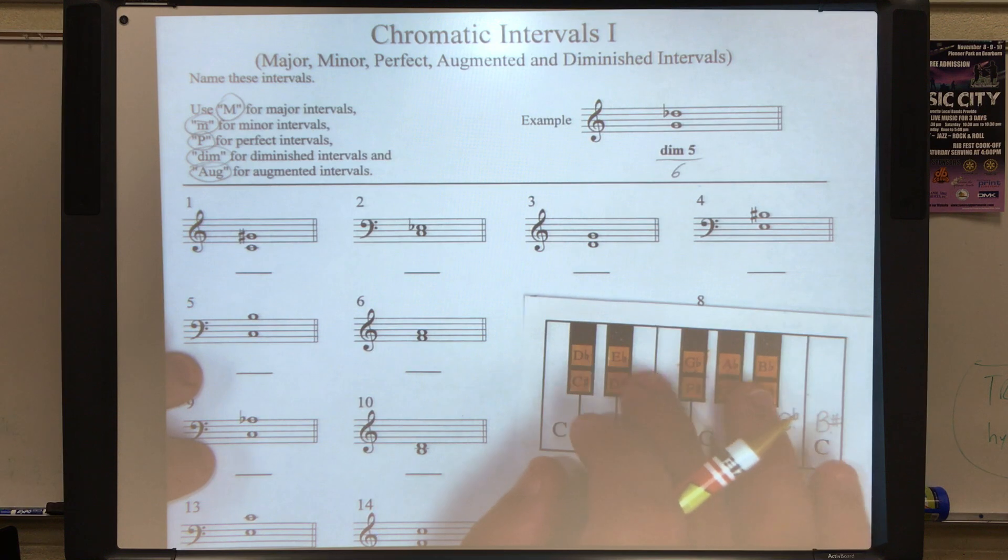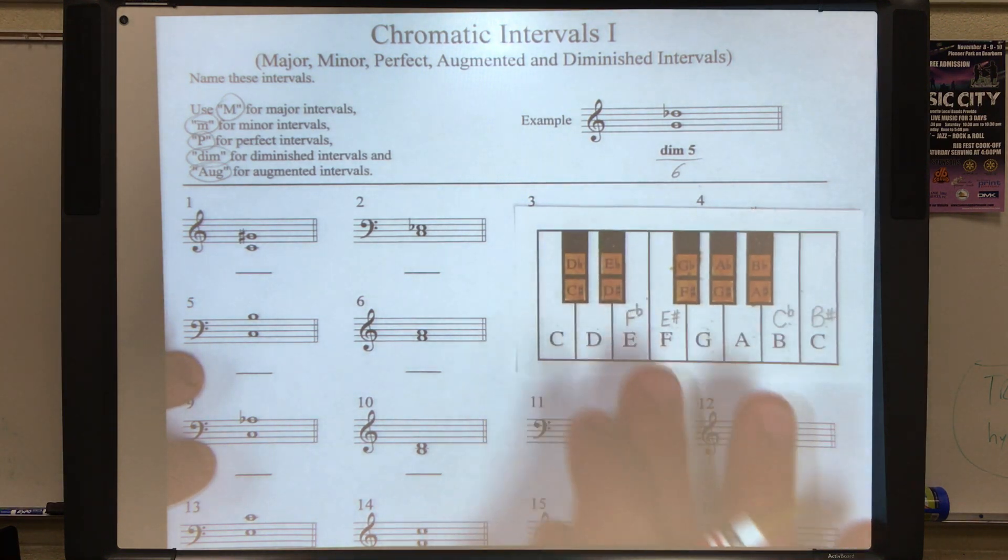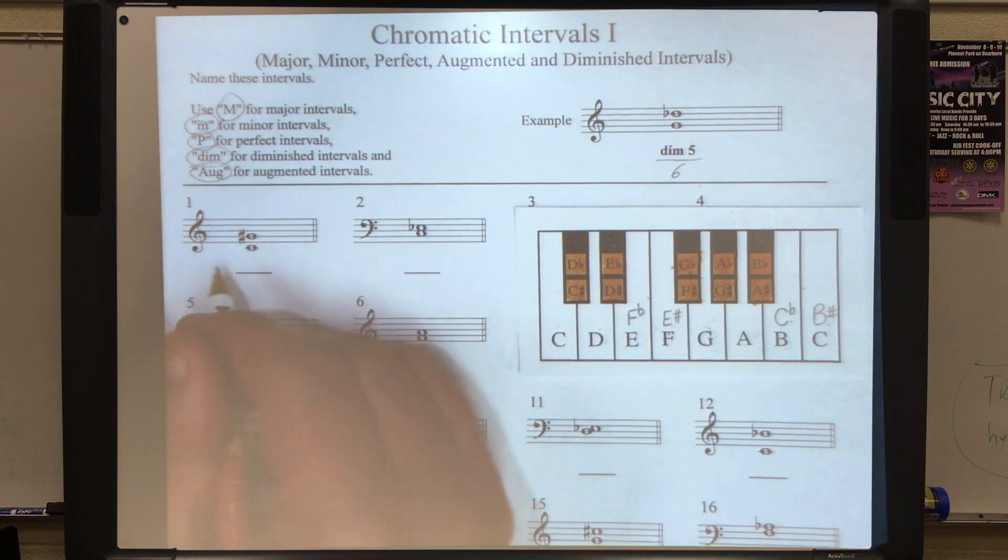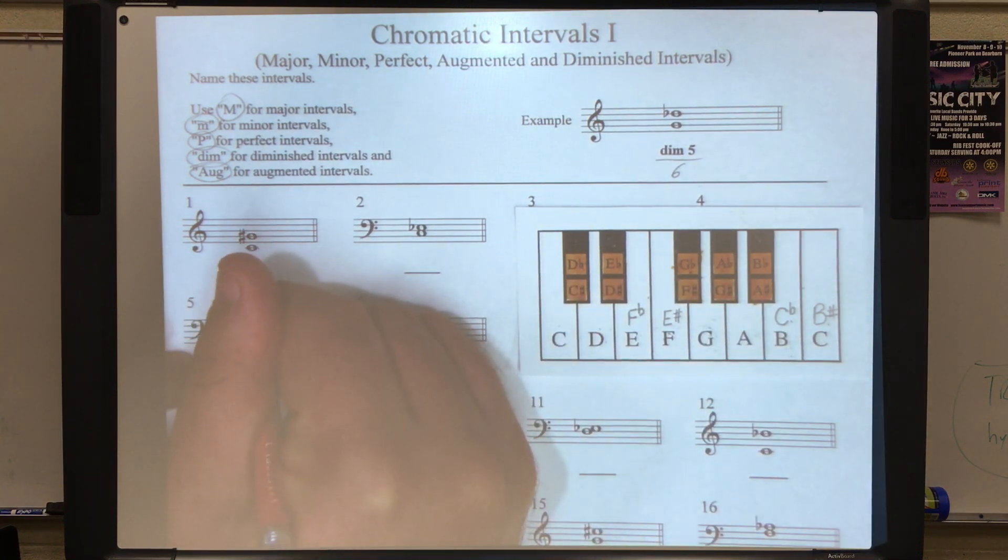Refer to your chart for these next few, for all of them actually. Let's go with this one. We've got a C to a G sharp. Starting on C. C is zero, one, two, three, four, five, six, seven. Sorry, one, two, three, four, five, six, seven, eight half steps. If we look at our chart, we can see that that is an augmented fifth.